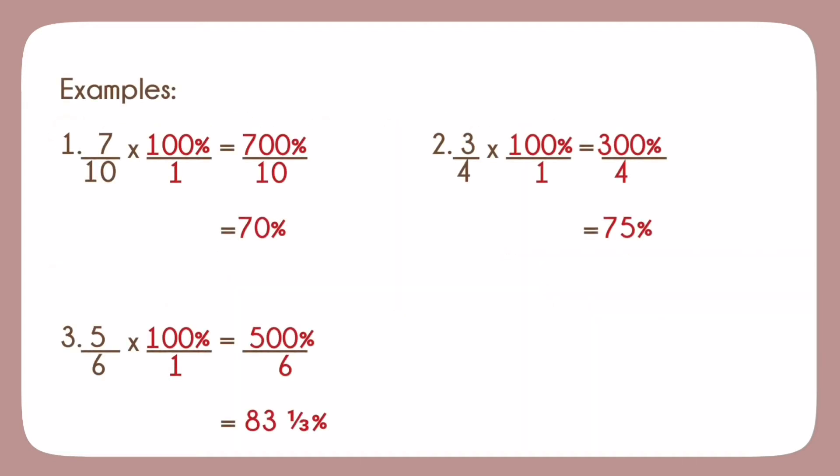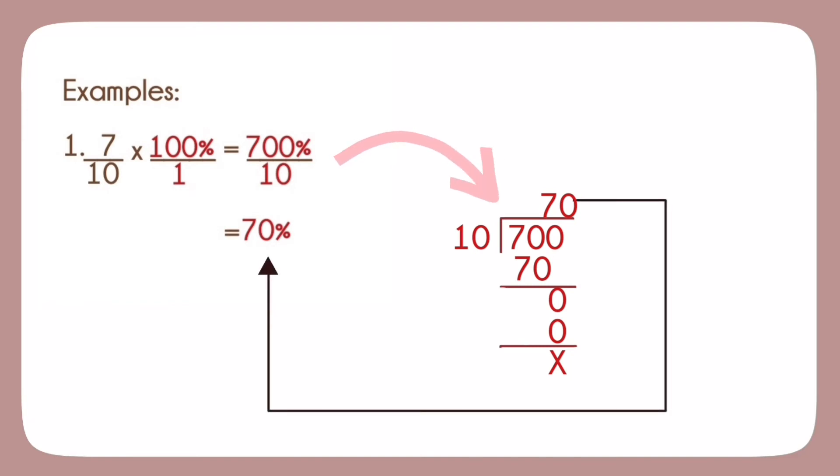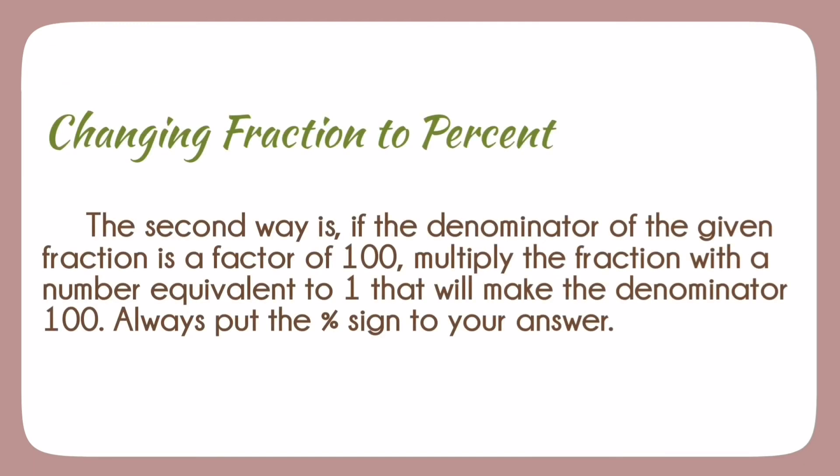Examples. Here, the fractions are multiplied to 100%. When multiplying a whole number to a fraction, we will use 1 as the denominator. That is why the first denominator and the denominator in the final answer are the same. 7 over 10 is multiplied to 100%. The sum will be 700% over 10. Then, 700% is divided by 10, which results to final answer of 70%.